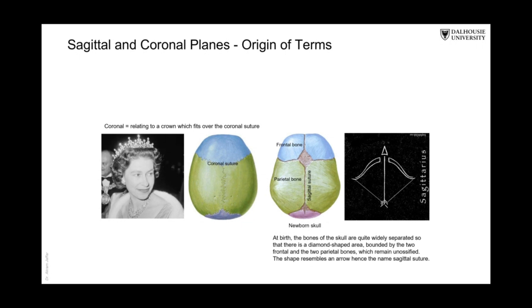And then the coronal suture, this is the coronal suture, which divides the body into anterior and posterior parts. It lies where the crown, some types of crowns are put on the head. That's why it is called the coronal suture.